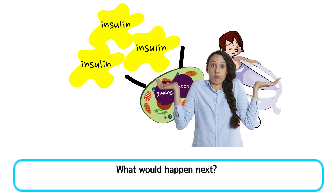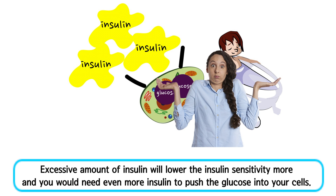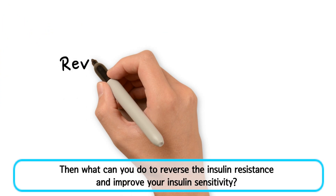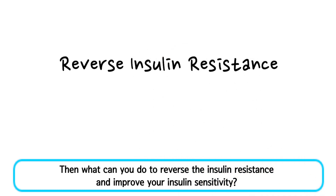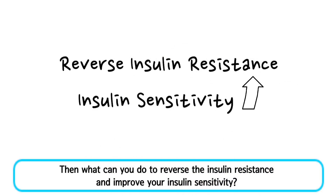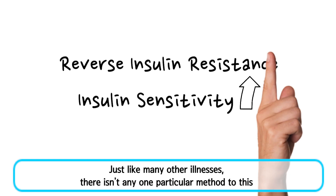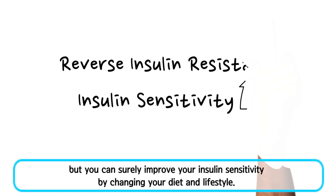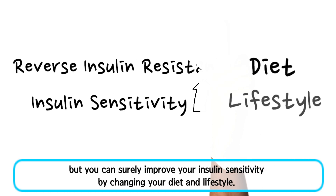What would happen next? Excessive amounts of insulin will lower insulin sensitivity further, and you would need even more insulin to push glucose into your cells. Then what can you do to reverse insulin resistance and improve your insulin sensitivity? Just like many other illnesses, there isn't any one particular method to this, but you can surely improve your insulin sensitivity by changing your diet and lifestyle.